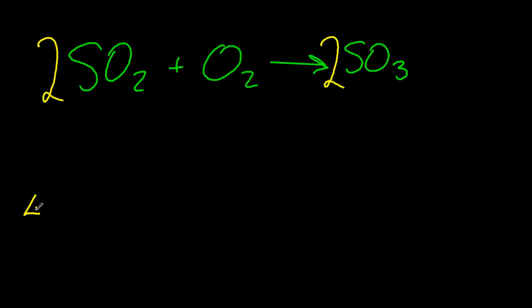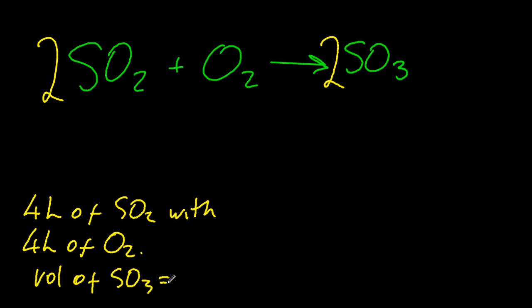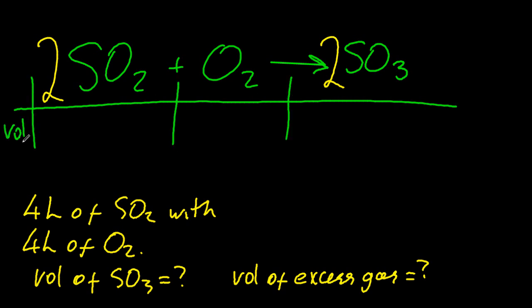This is the contact process. So let's look at a question that comes up a lot. Four litres of sulphur dioxide and four litres of oxygen. So how much are we going to make? Now, you might be tempted to say eight litres, but it's never going to be that.